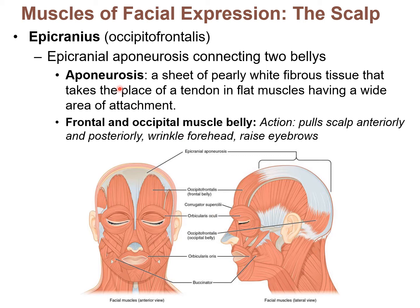This first muscle is called the epicranius, or occipitofrontalis. Thinking of the occipital bone and frontal bone — that's exactly where this muscle travels from. You'll see a muscle belly in the frontalis area and a muscle belly on the occipital bone called the occipitalis. This muscle has a wide, broad connective tissue sheet connecting the two muscle bellies called an aponeurosis — a sheet of fibrous tissue, like a wide piece of connective tissue. You'll see aponeuroses in the abdomen as well.